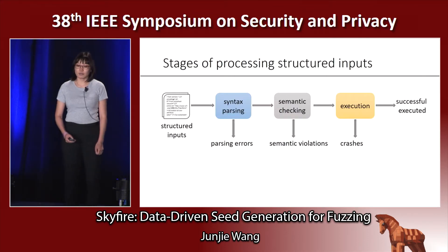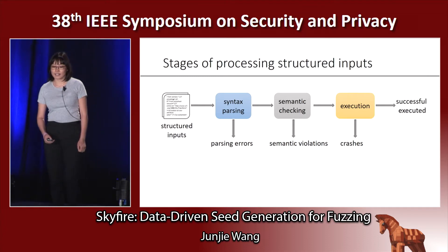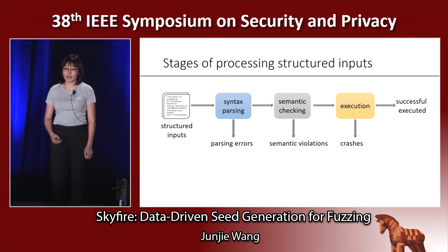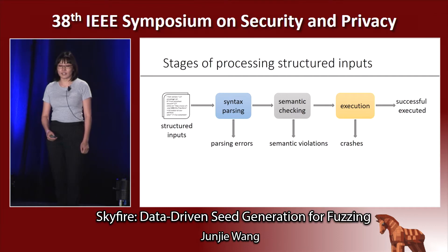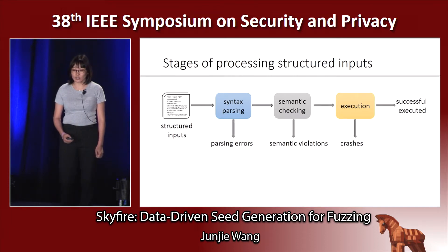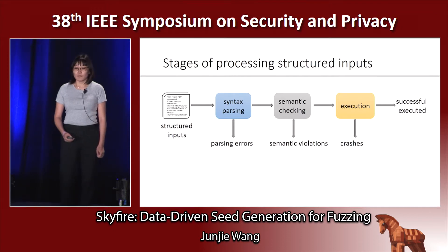Structured inputs are normally processed in three stages: syntax parsing, semantic checking, and execution. If an input fails the syntax parsing or semantic checking, it will get rejected at an early stage. However, the vulnerability is normally hidden in the execution stage, so it is not easy to automatically generate test cases to trigger those vulnerabilities.